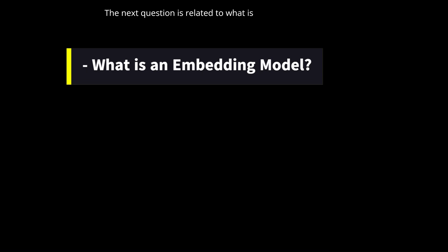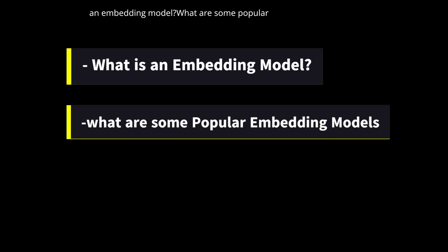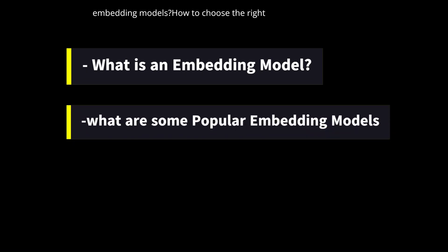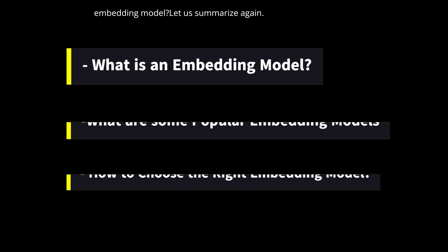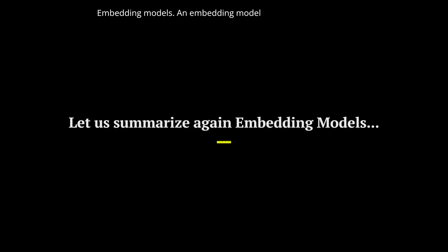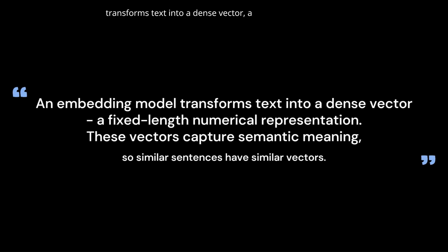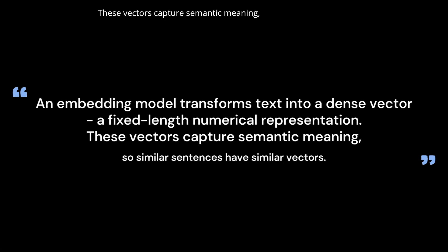The next question is related to: what is an embedding model, what are some popular embedding models, and how to choose the right one? An embedding model transforms text into a dense vector — a fixed-length numerical representation. These vectors capture semantic meaning, so similar sentences have similar vectors.